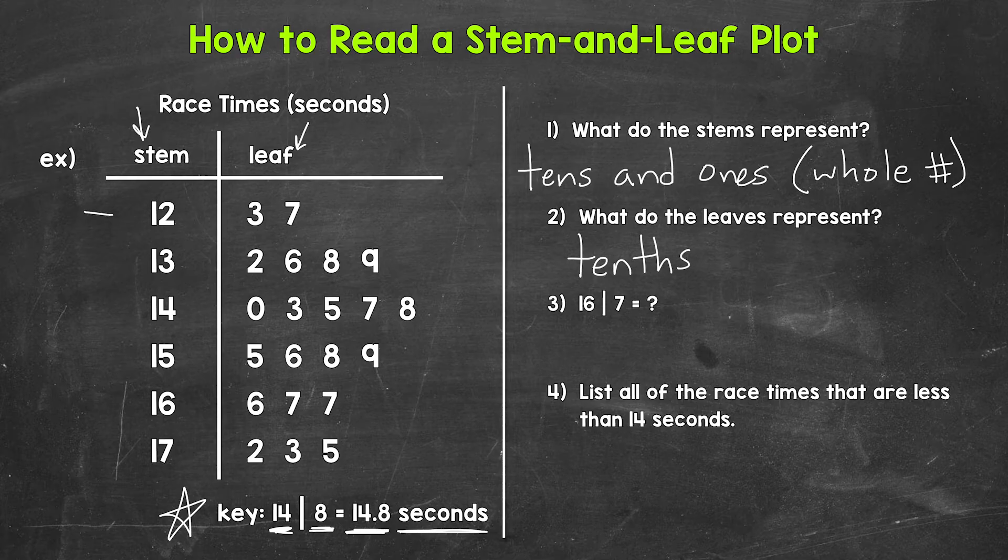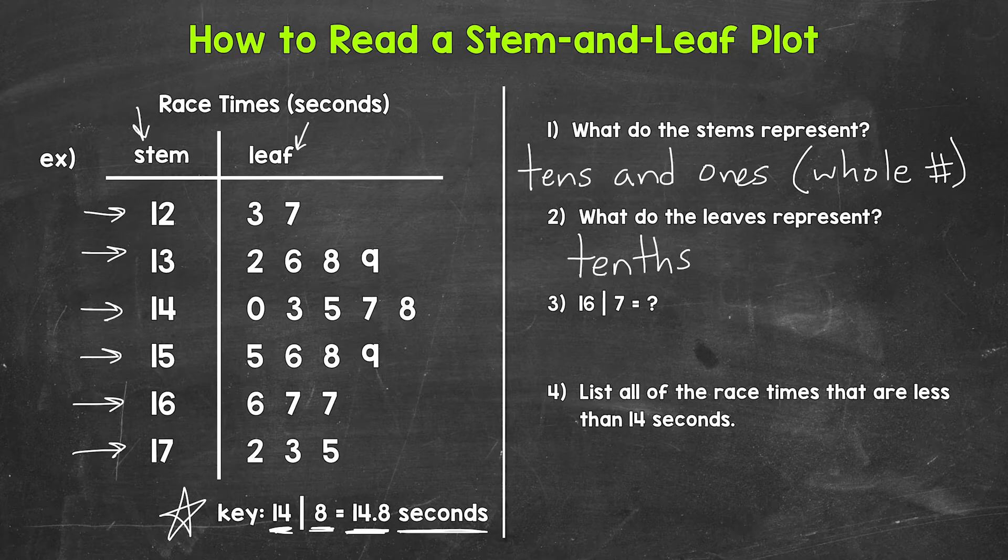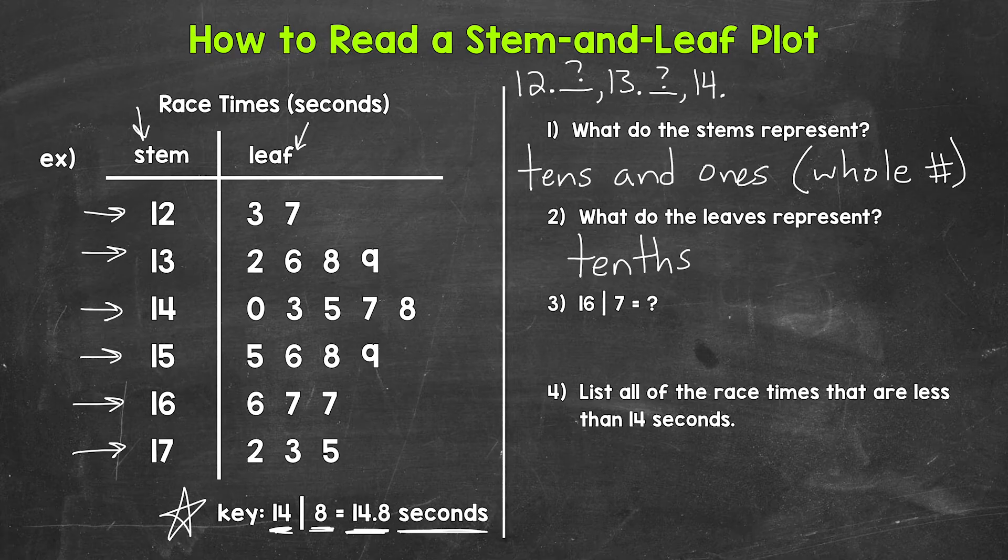For the stems, we have 12, 13, 14, 15, 16, and 17. Think of the stems like this. We'll start with the stem of 12, decimal, and then for the tenths place, that's where the leaves go. Then we have the stem of 13, decimal, then the leaves. Stem of 14, decimal, leaves.